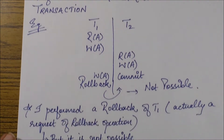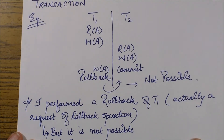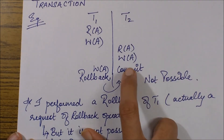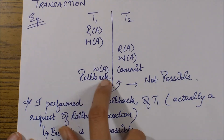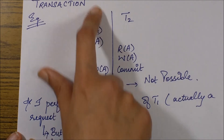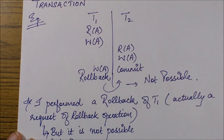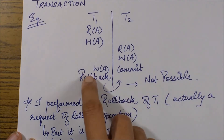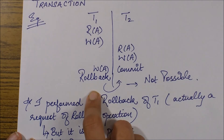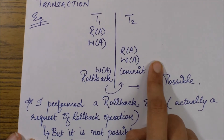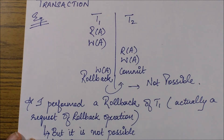Let's see its structure. In this schedule, I have two transactions T1 and T2 performing their actions concurrently. We have read A, write A, read A, write A, and write A operations. T2 commits before T1's rollback occurs. When I issue a rollback command for T1, it means I'm trying to roll back this entire thing, and I would also have to roll back the changes made by T2, since T2 was performing work on T1's changes.